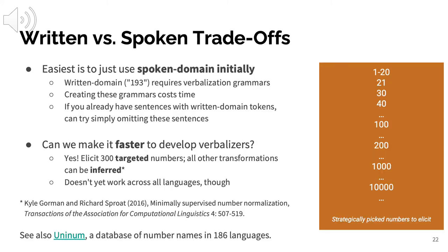Given the sheer diversity of verbalization problems, it's actually typically easiest to just use spoken domain initially — write down letters like 'O' and 'E' instead of the digit one, avoiding the need to create verbalization grammars. However, if you want to make a state-of-the-art commercial-grade speech recognition system that can also be used for voice assistants, you probably do need those verbalizers to handle things like times.